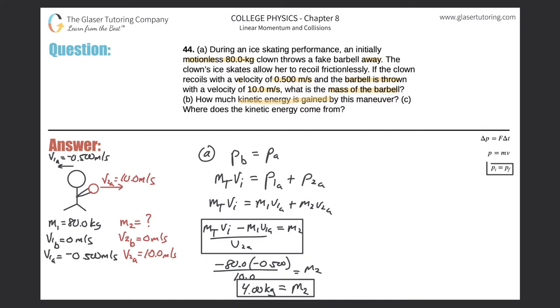moving on to B. How much kinetic energy is gained by this maneuver? So in thinking about kinetic energy gained, we have developed this formula before. The kinetic energy gained equals the kinetic energy final minus the kinetic energy initial. So the kinetic energy gain equals the final kinetic energy. Now remember, after this pushing off happens, we got two separate objects.